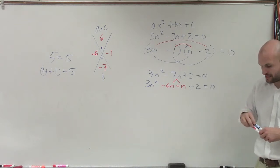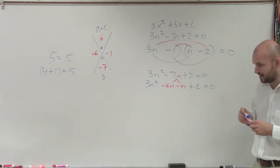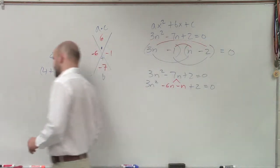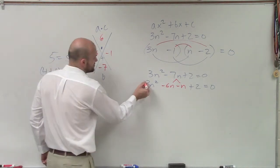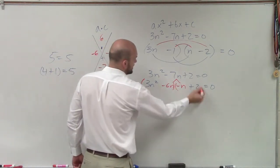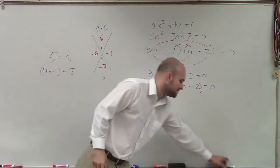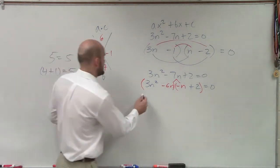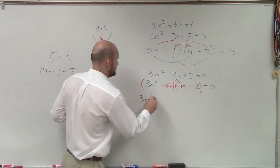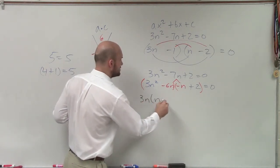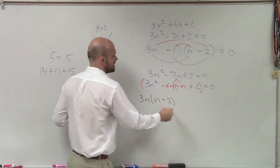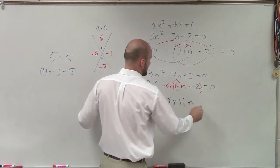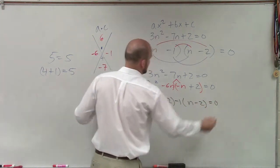But the reason why I like to break it up is because now we can apply our factoring technique of grouping. Which tells me to group the first two terms and group the last two terms. Now I factor out the GCF, which in this case 3n squared minus 6n, I can factor out a 3n. Minus 2 equals 0.